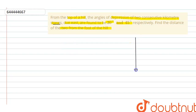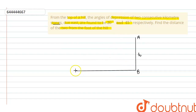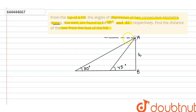For this type of question, I first have to draw a diagram. Let this be a hill with height AB = h. There are two stones: the first stone is at 30 degrees and the second stone is at 45 degrees. The angle of depression — the bigger angle is 45 degrees and the smaller is 30 degrees. By the alternate angle theorem, this angle is 30 degrees and this is 45 degrees. Let the stones be C and D.